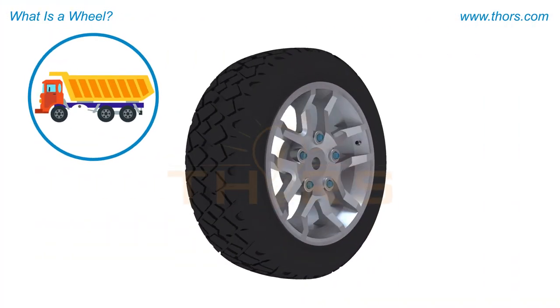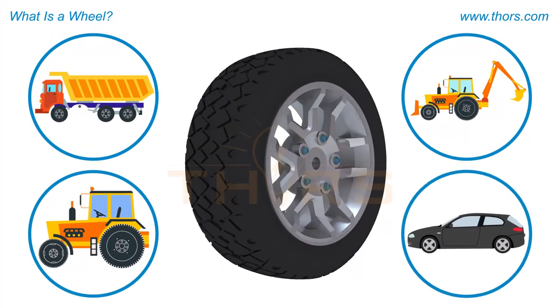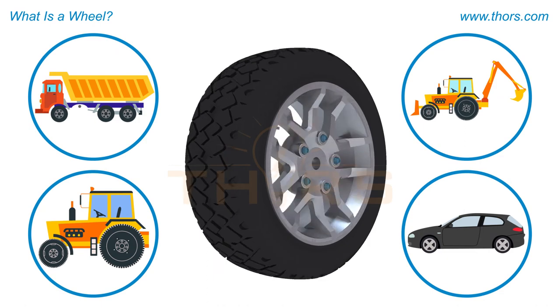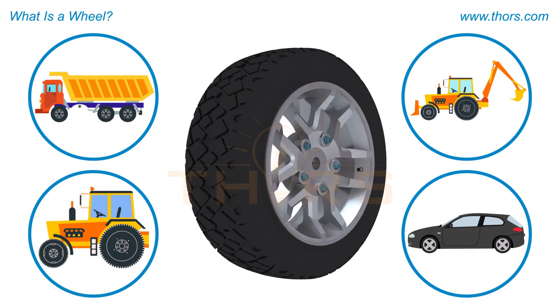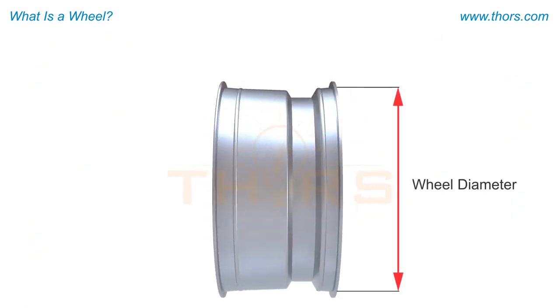The number of wheels on a vehicle and wheel size depends on the type and capacity of the vehicle. The wheel diameter and the rim width are the two-dimensional characteristics that define the size of the wheel.